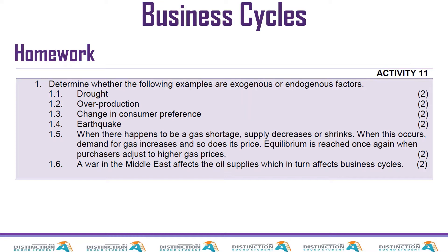Those fluctuations can either be caused by factors from outside or by factors from within the economy. When fluctuations are caused by things from outside, we call them exogenous reasons. When they are caused by things from within, we call that endogenous.